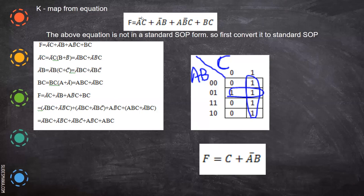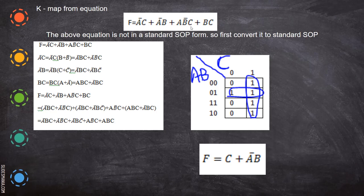To convert to standard SOP, you have to introduce the missing variable. For the first term A-bar C, B is missing — so write A-bar C times (B + B-bar), which equals 1, giving A-bar B C and A-bar B-bar C. For the term where C is missing, multiply by (C + C-bar). For BC, A is missing, so multiply by (A + A-bar).